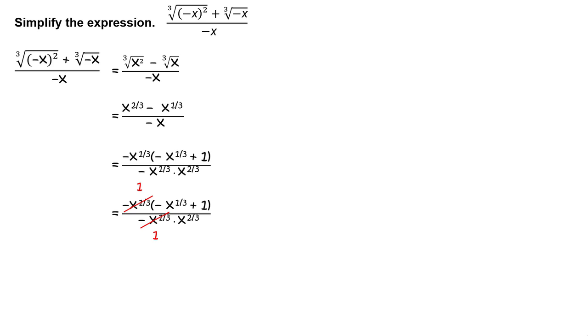Divide out the common factor of negative x raised to 1 third. Simplify to get negative x raised to 1 third plus 1, divided by x raised to 2 thirds.